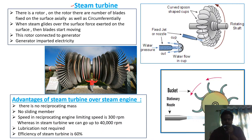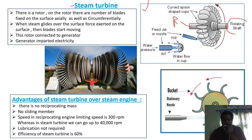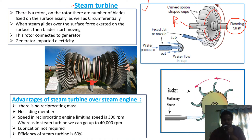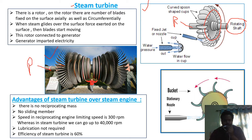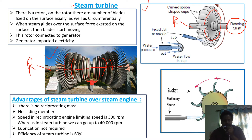Now let us see the working of a steam turbine. As you can see in this figure, it has a rotor or rotating shaft on which blades are fixed both axially and circumferentially along the axis of the shaft.